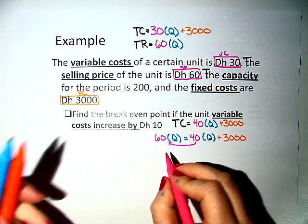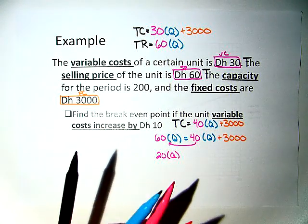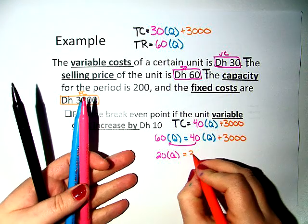So we move 40 over, and we get that 20Q equals 3,000.